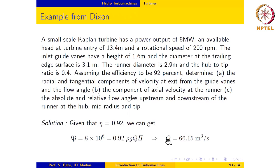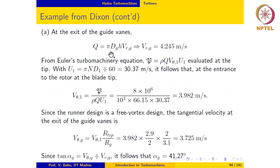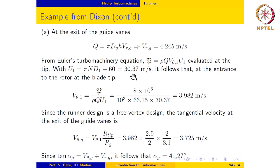This installation is ideal for a Kaplan turbine because it works with low head and high flow rate. At the exit of the guide vanes, the flow area is pi times dg times the height of the guide vanes, multiplied by the radial component of velocity, giving a radial velocity of 4.245 meters per second. Applying the Euler turbomachinery equation at the blade tip, with v-theta2 equal to zero, u1 evaluated as pi times n times d1 over 60 equals 30.37 meters per second, and the swirl velocity at the entrance to the rotor at the blade tip comes out to be 3.982 meters per second.